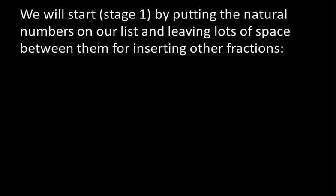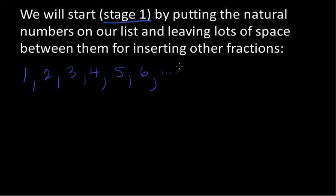Making a list of the rational numbers using this method — there are many ways, but we will use four stages. It's a different method than used in the book, but it is one that one of the authors taught me. Stage one: we're just going to put the natural numbers on the list, because every natural number is a rational number. So I'm going to start with 1, 2, 3, 4, 5, 6, and so on.